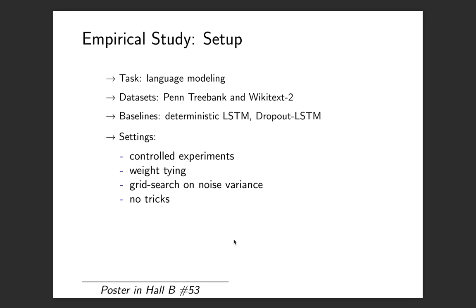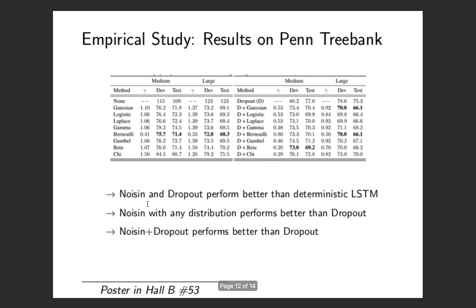In our experiments, we tried the language modeling tasks. We tried the Penn Treebank and the WikiText dataset, which are two benchmark datasets for language modeling, and we used two baselines: deterministic LSTM and dropout LSTM. In our settings, we tried to keep them as simple as possible so that we can compare the effectiveness of NOISIN and dropout as regularizers. We performed controlled experiments. We did weight tying where you match the input embedding matrix to the output prediction matrix. We grid searched on the noise variance. There were no further tricks performed for these results.